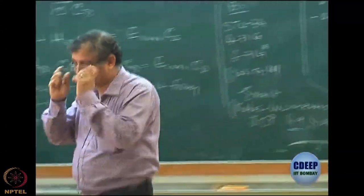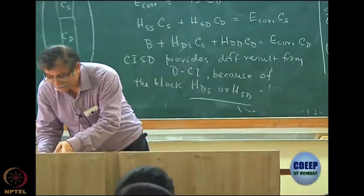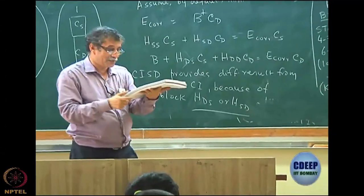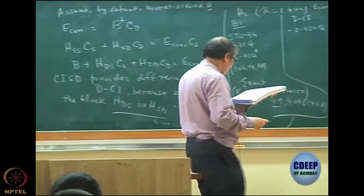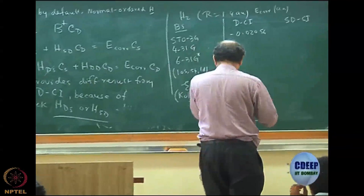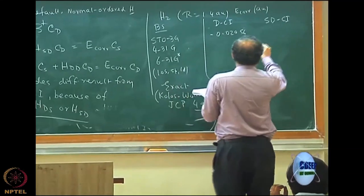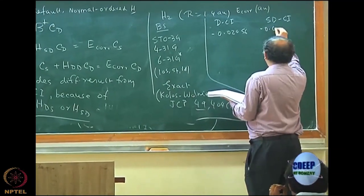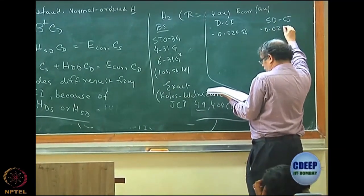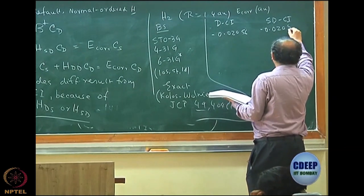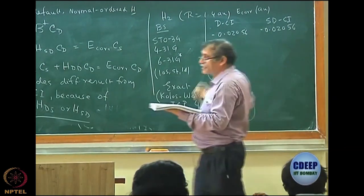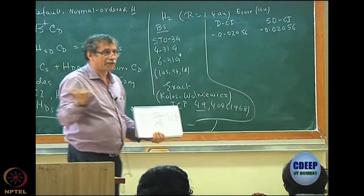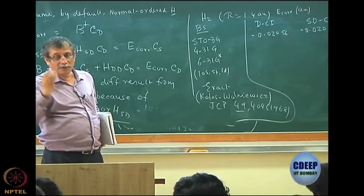Going back to the book: the DCI correlation energy is −0.02056 atomic units. Up to this decimal there is no difference in STO-3G, of course there is a difference beyond the 7th or 8th digit.